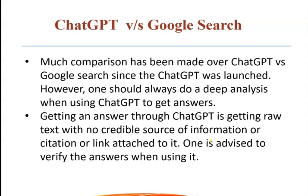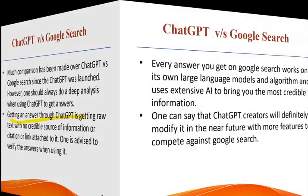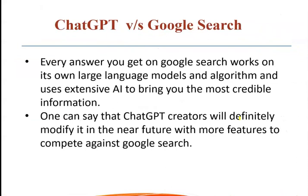Since ChatGPT launched, one should always do a deep analysis of its answers. ChatGPT provides raw text with no credible source, no attachments, no links, and no references — so you must verify the information. Google, by contrast, works on large language models and algorithms and gives you credible information with links. ChatGPT creators will definitely modify it in the near future with more features to compete against Google.